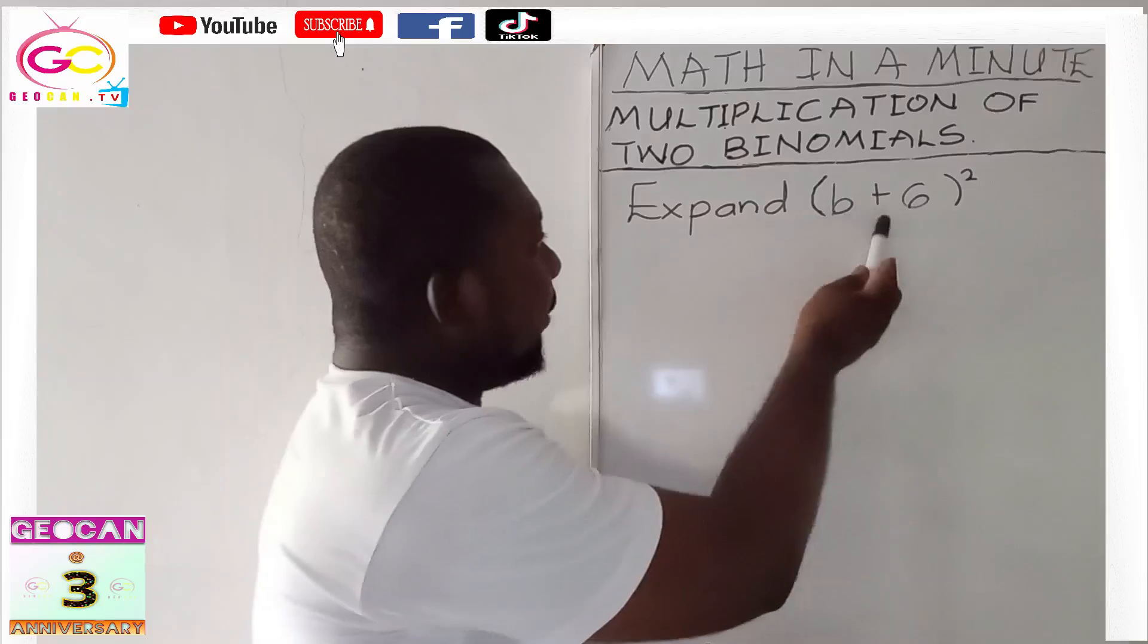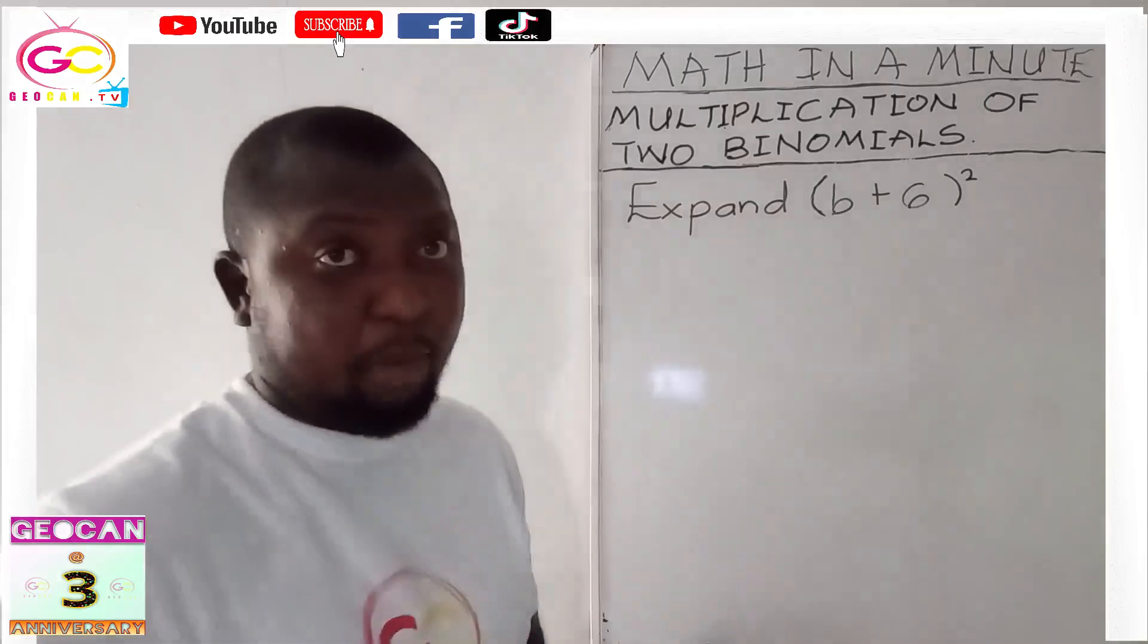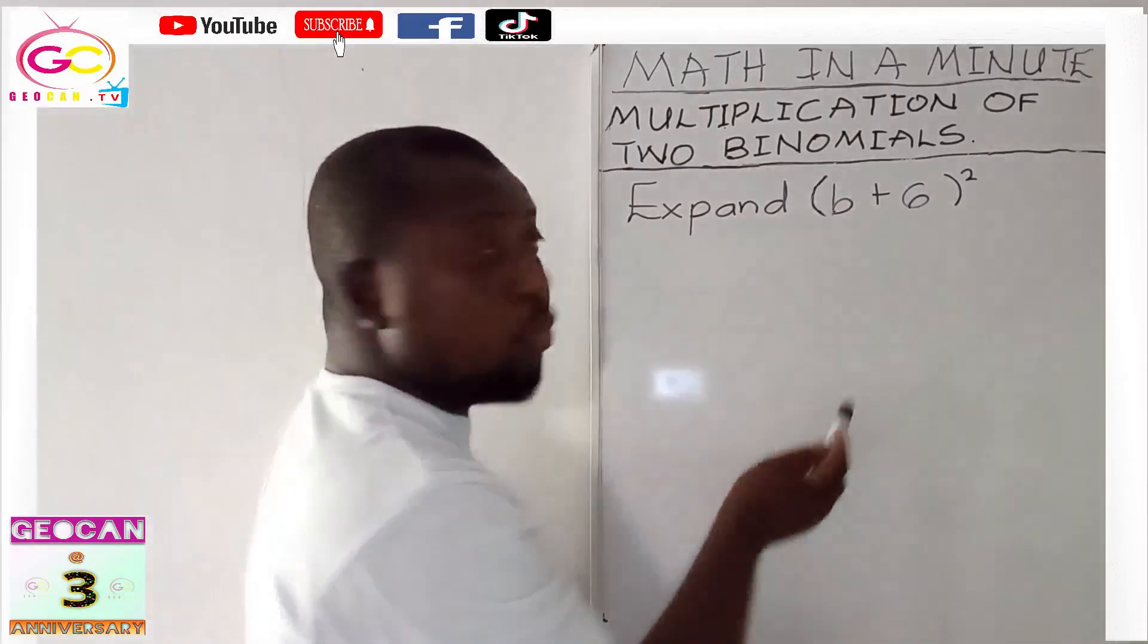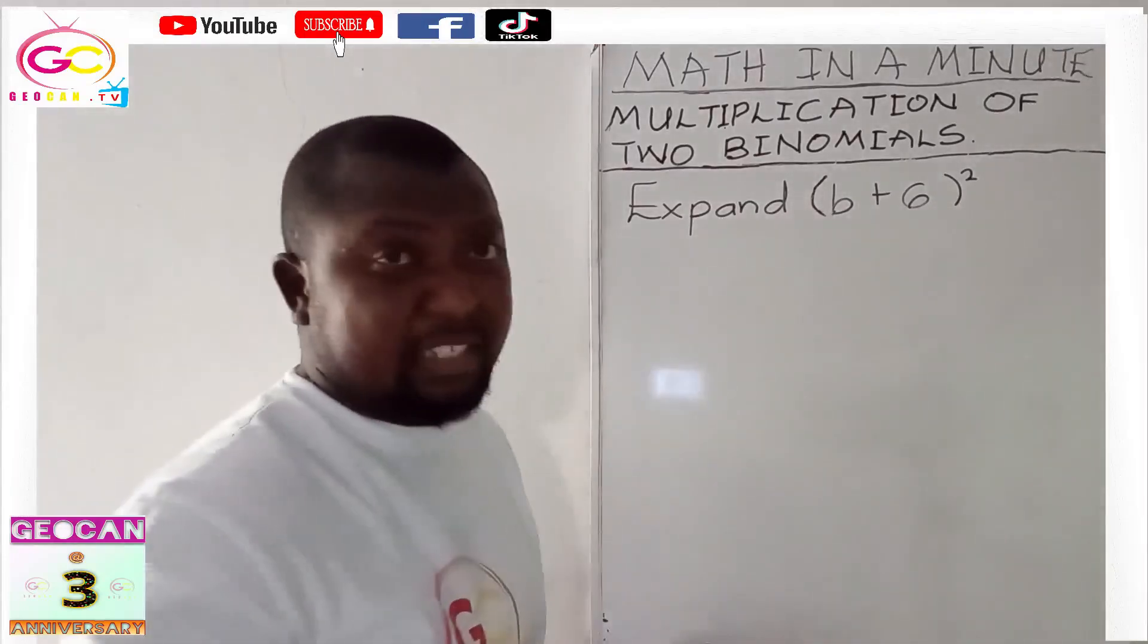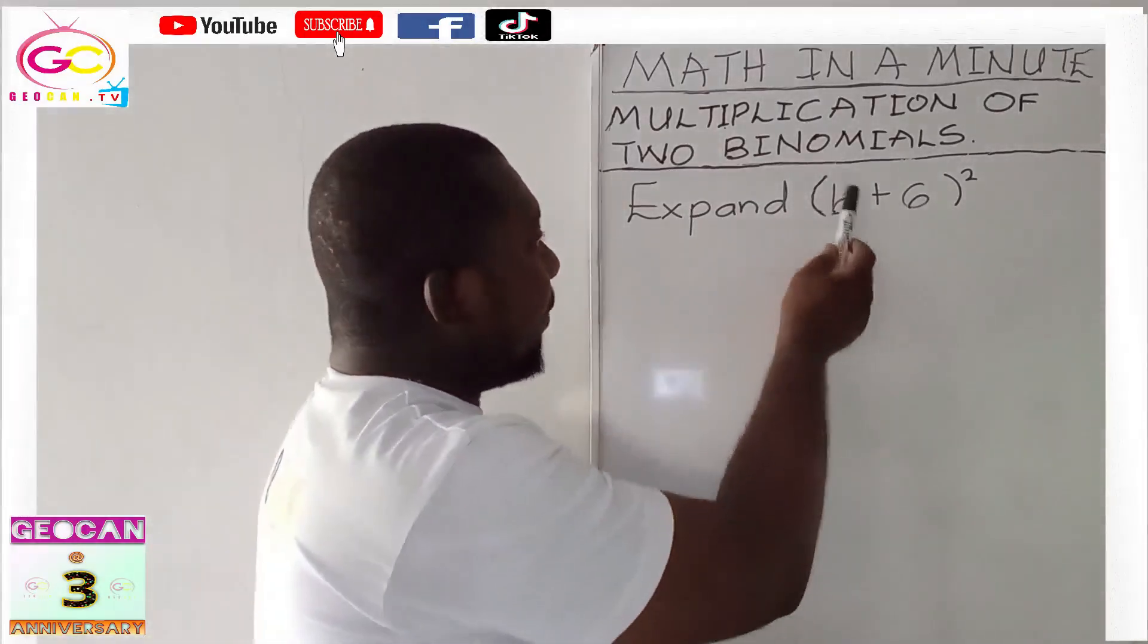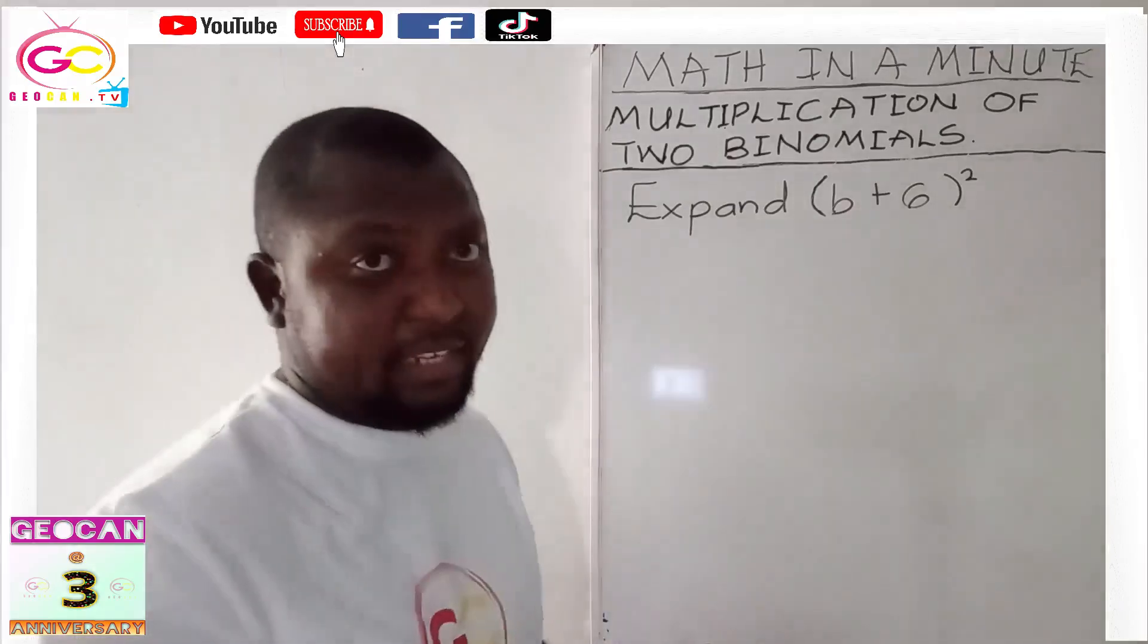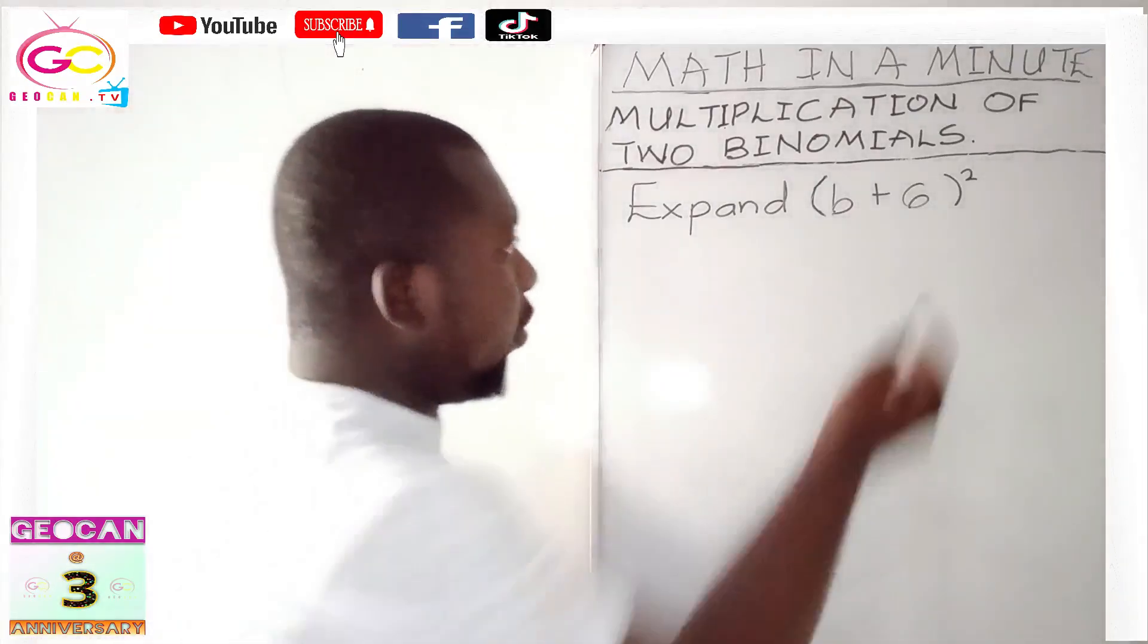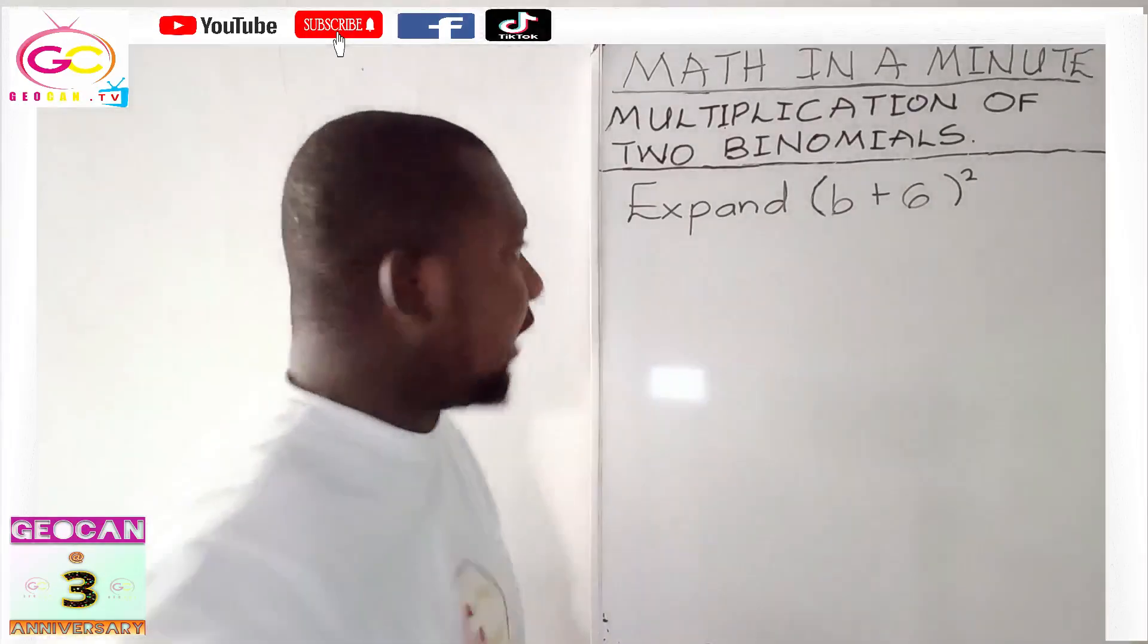Expand (b+6)². This is raised to the power 2. What it simply means is that you are multiplying b plus 6 twice, because this is 2.